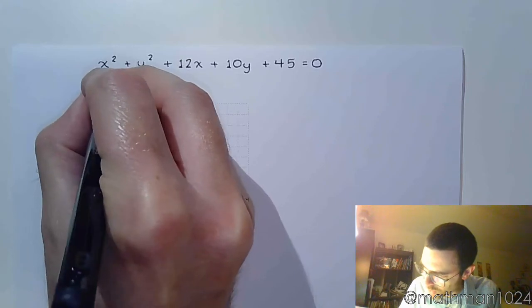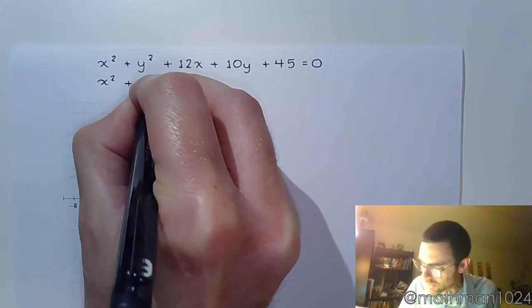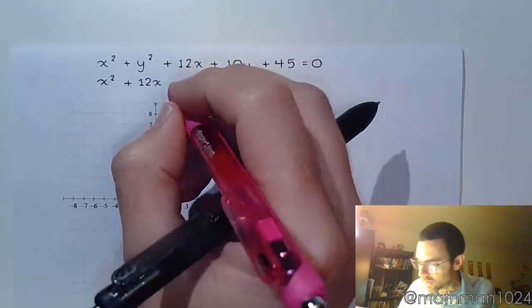So I'm going to rearrange, that's going to be x squared plus 12x. I'm going to leave some space here like I've always done.